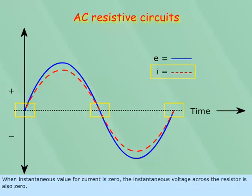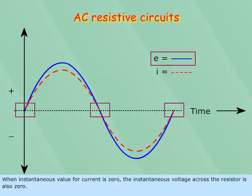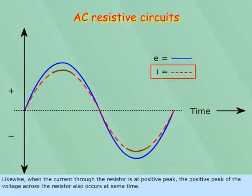When instantaneous value for current is zero, the instantaneous voltage across the resistor is also zero. Likewise, when the current through the resistor is at positive peak, the positive peak of the voltage across the resistor also occurs at same time.